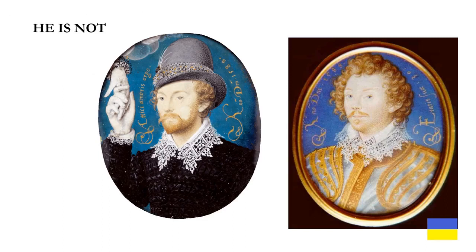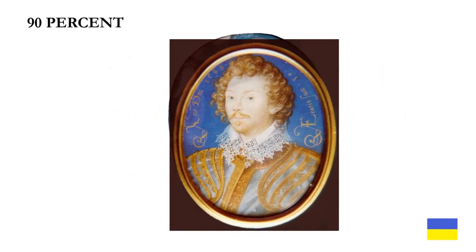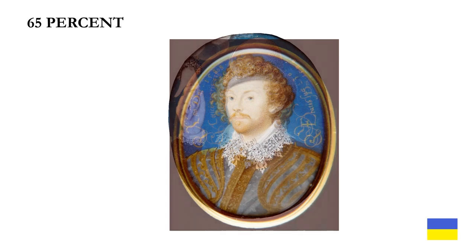What I'm going to do is superimpose De Vere's portrait over top of the misidentified portrait with degrees of transparency, starting at 90%, then 80%, 75%, 65%, 60%, 55%, and 50%. You can see that De Vere's eyes, nose, beard and mouth have not changed one bit.